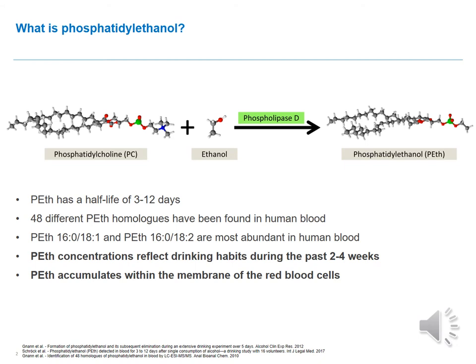Phosphatidylethanol is a direct alcohol marker which is formed within the human body when alcohol is present. Thereby the choline head from phosphatidylcholine gets replaced with ethanol to result in phosphatidylethanol. The PET itself has a half-life of 3 to 12 days. Up to 48 different PET homologues have been found in human blood, whereby PET 16:0/18:1 and PET 16:0/18:2 are the most prominent ones and often measured together.